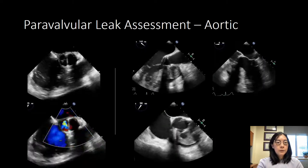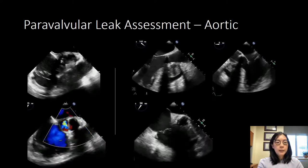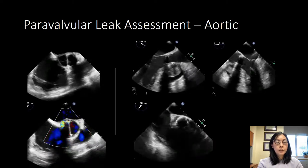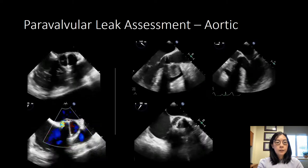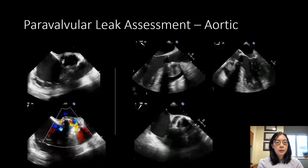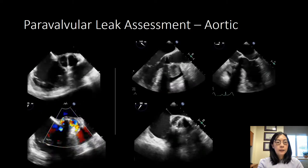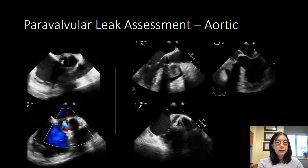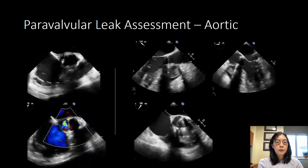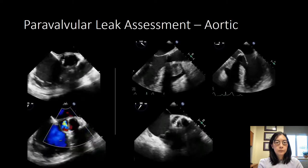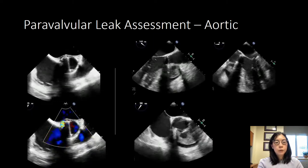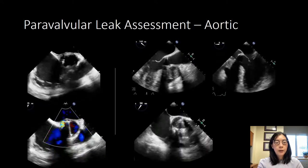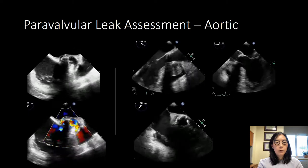Once we've done the transgastric views for aortic valves, we come up to the mid-esophageal. Here you can see examples demonstrating why the posterior annulus is well seen on transesophageal echocardiograms versus on transthoracic. This area tends to be shadowed with mechanical aortic valves. In contrast, on transesophageal echocardiograms, the anterior annulus of the aortic valve is heavily shadowed and difficult to see. In the mid-esophageal views, we typically sweep from side to side or up and down from the LVOT up to the aorta in order to ensure that all jets are identified.